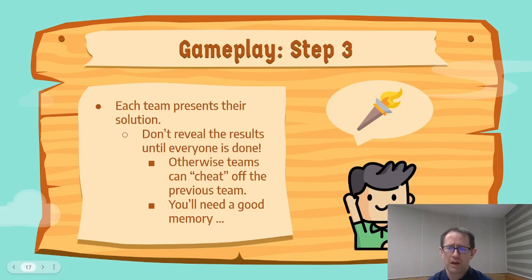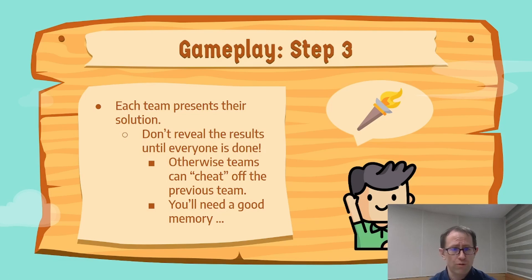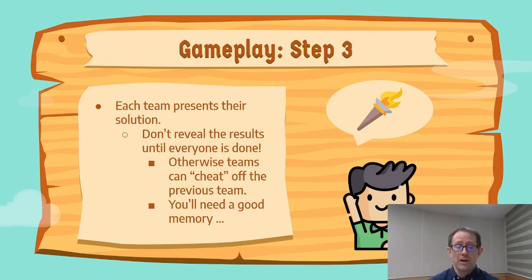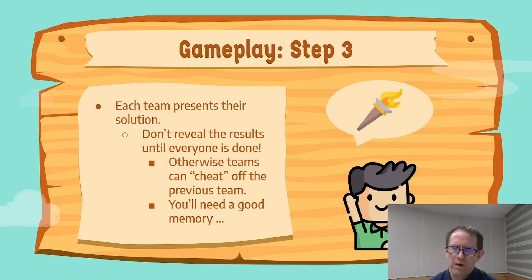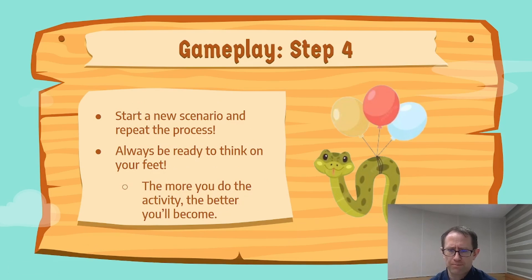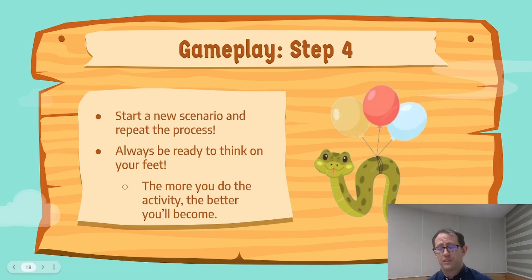Alright, so when time is up, each team presents their solution to the scenario. Important: don't reveal the outcomes until all the teams have presented their solutions. Once each team has presented, address the results of each team's actions in order, giving points when necessary. Note that this does require a bit of memory on your behalf. And that's it — go back to step one and repeat the process until it's time to finish.